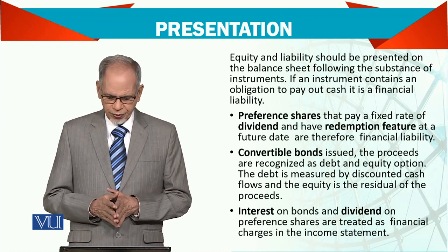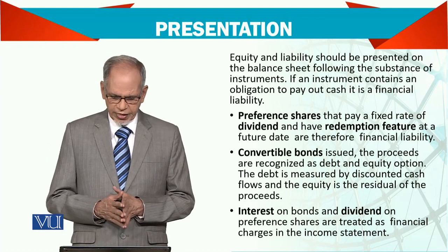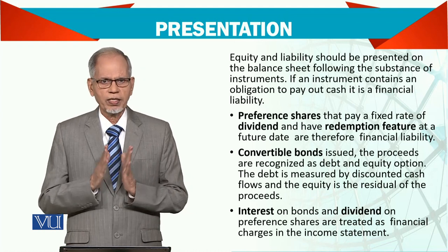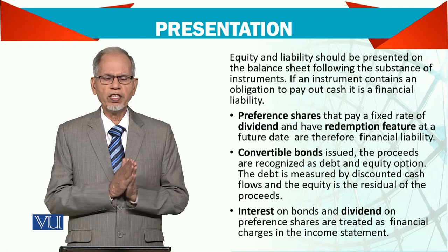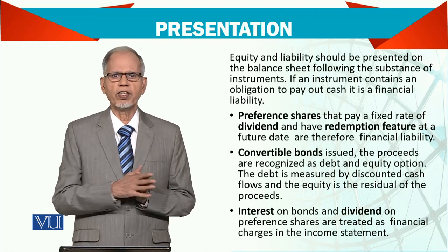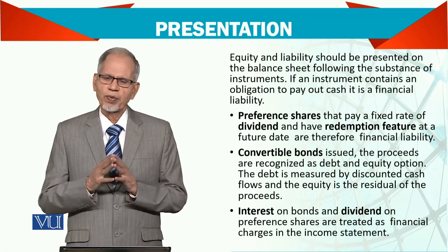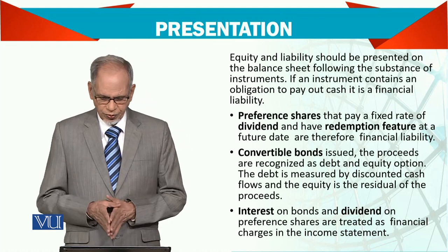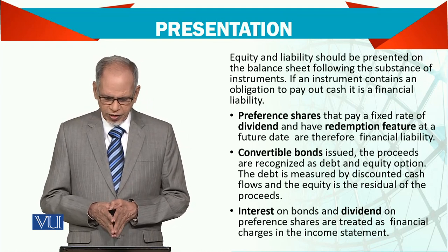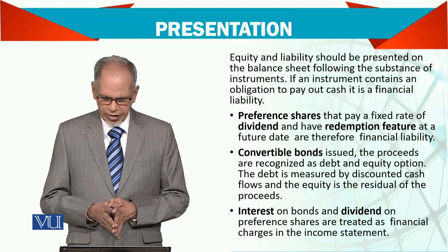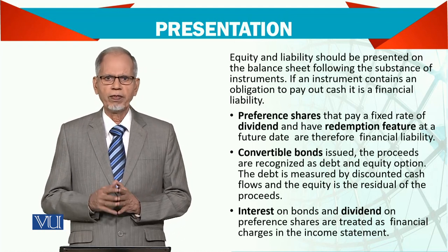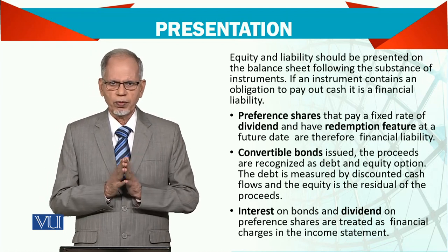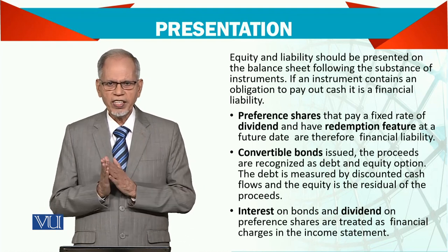For a convertible bond issued, the proceeds are recognized as both a debt component and an equity option. Convertible means the holder can choose to convert the bond into equity, which is why it is part equity and part debt. The debt component is measured by discounting the cash flows, and the equity is the residual of the total proceeds. We will see in a question how to split the total convertible bond proceeds into the liability and equity portions.